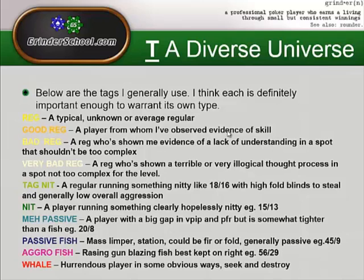Tag-nits are definitely people you should try to play with when you don't have better options — they're in the middle of the pack but towards the positive side. Then you have a Nit, who is someone you definitely want to play with — a player running something clearly hopelessly nitty like 15/13 or less. It's hard to put an arbitrary measure on it; you could get a guy that's 18/16 but just really really nitty and straightforward — I'd still tag them as a Nit.